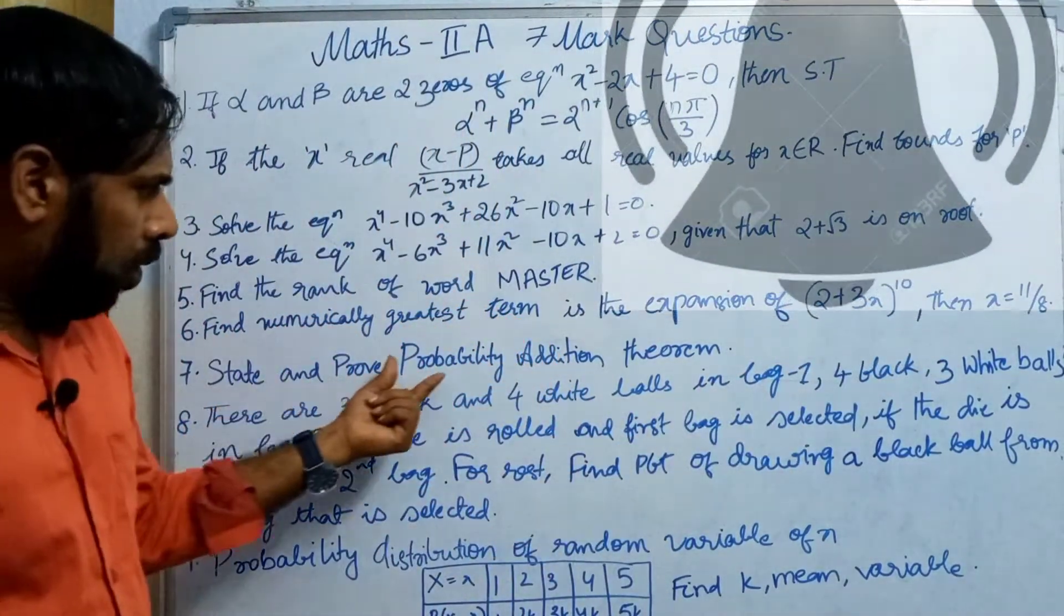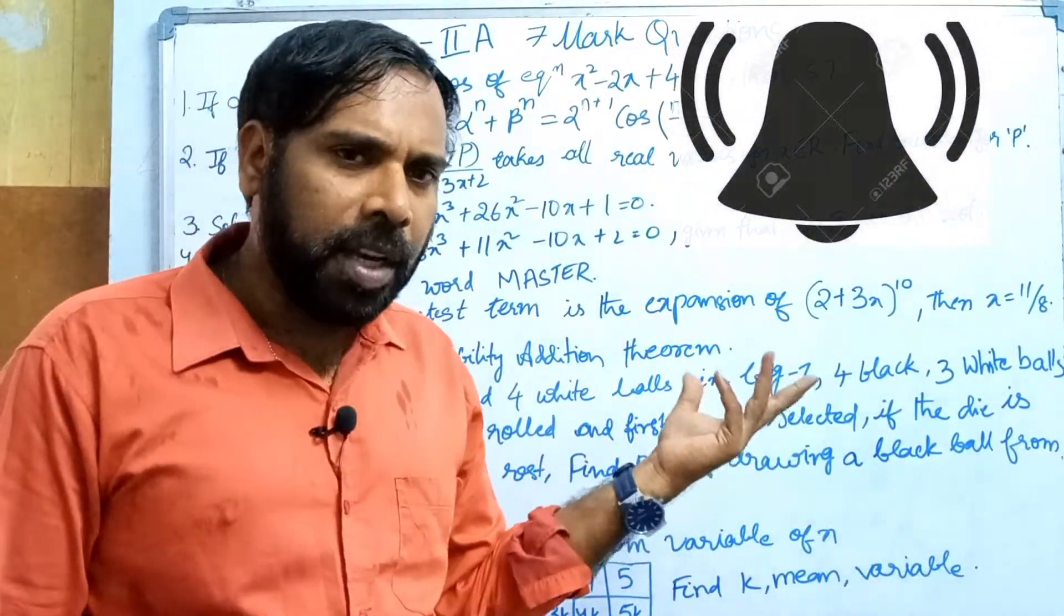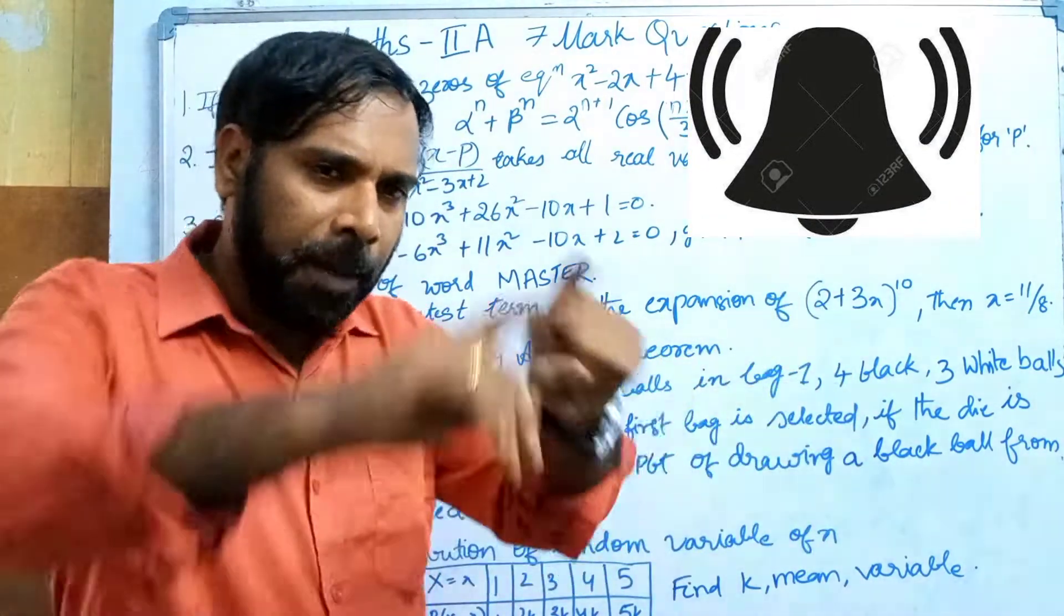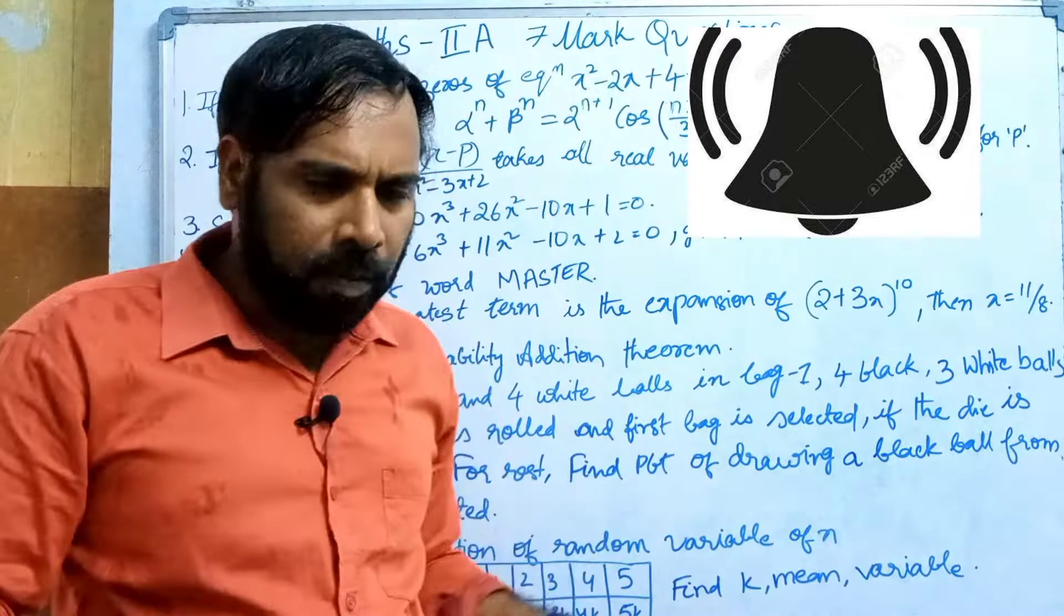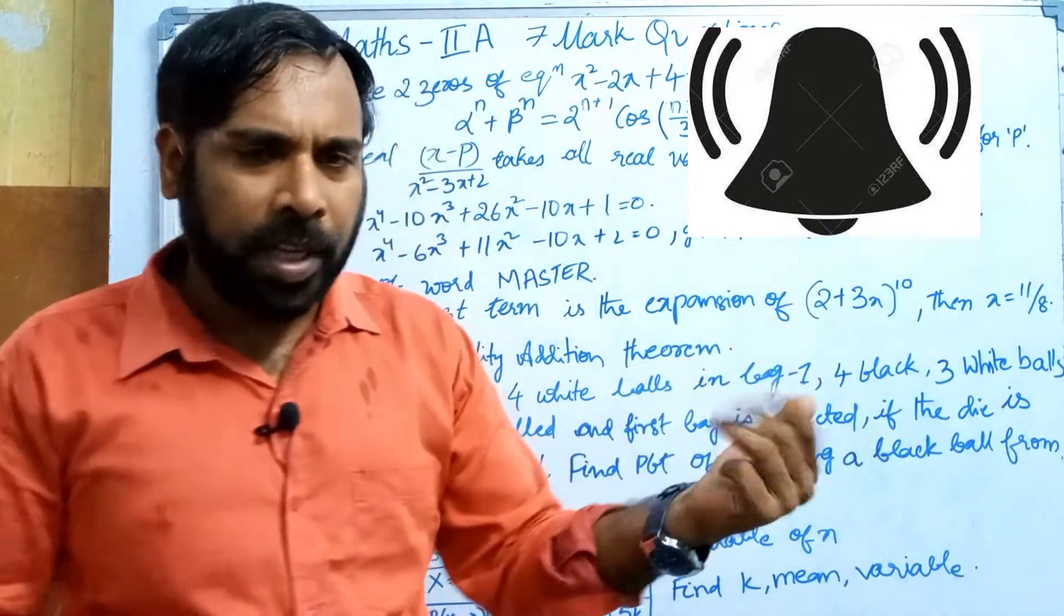State and prove probability addition theorem. We can explain the probability addition theorem: P of A union B equals P of A plus P of B minus P of A intersection B. Here are 2 cases: A intersection B equals phi, and A intersection B not equals phi. Around the cases in one case also.